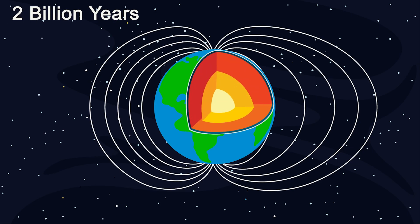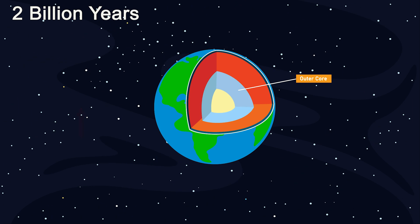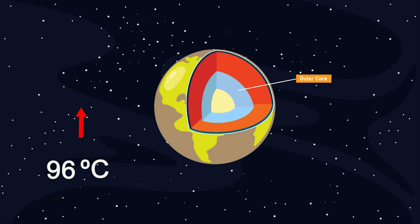2 billion years into the future, Earth's outer core freezes, causing its magnetic field to disappear. Without this protective shield, the solar winds deplete the atmosphere, causing Earth's temperature to rise even further.